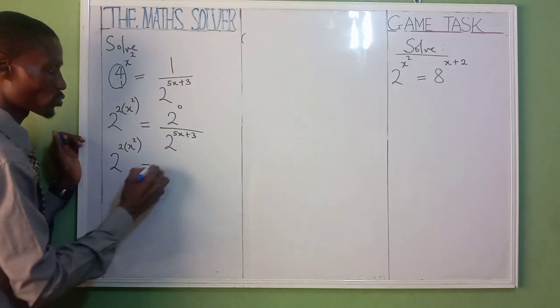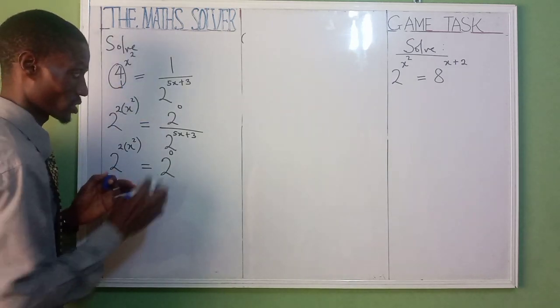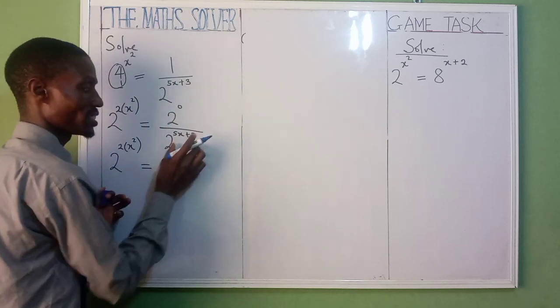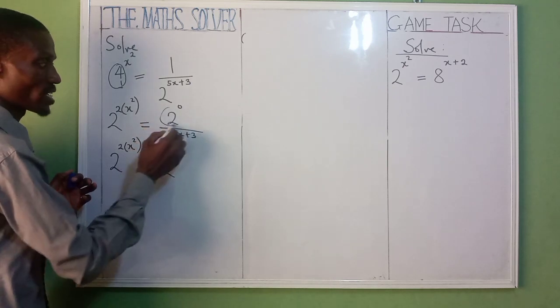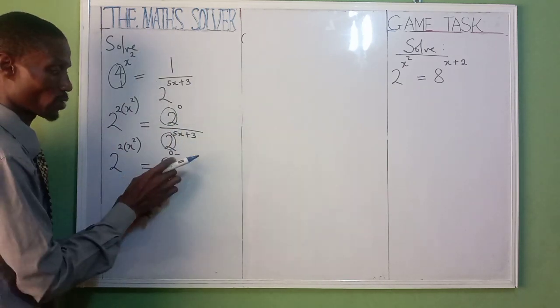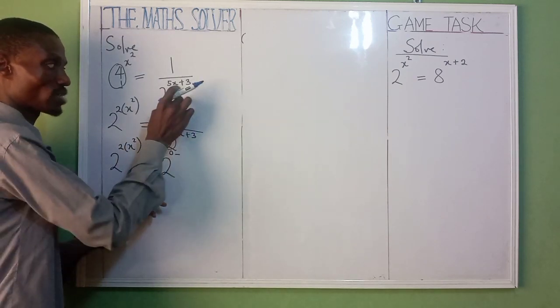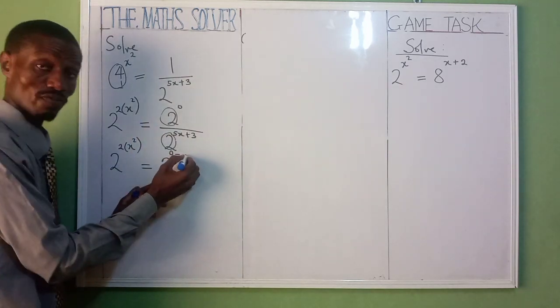Now 2 raised to the power of 2 into bracket x raised to the power of 2, now equal to 2 raised to the power of 0. Rule of indices: the 1 that is down here, you bring it up, and as you're bringing it up, you put negative sign in front of it.